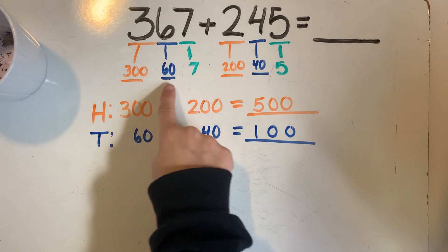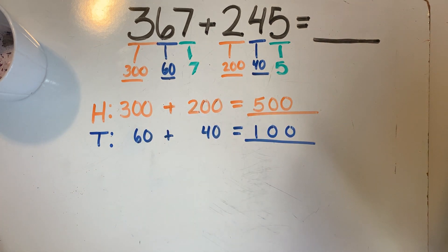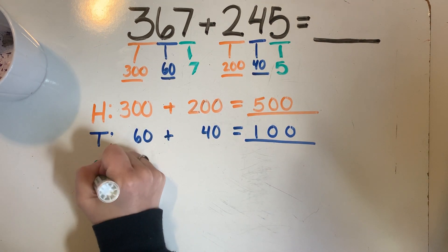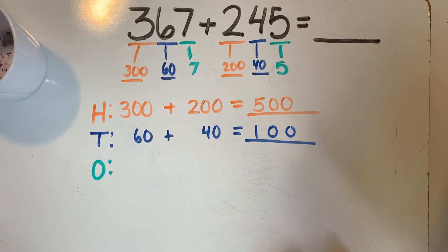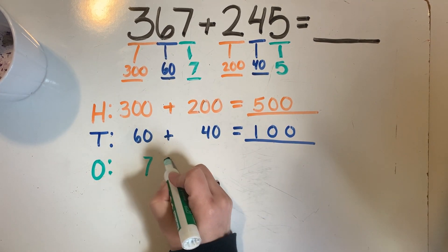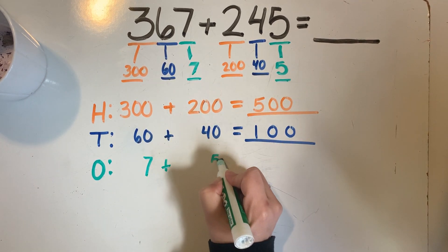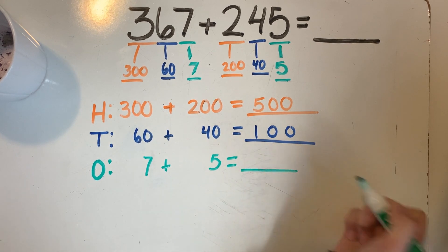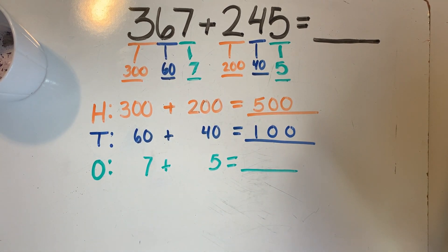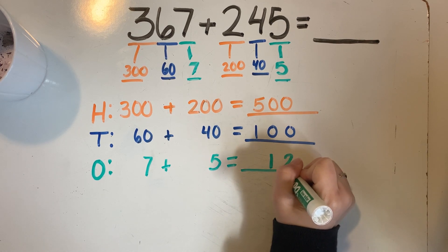Now that I've finished with my tens place, I can move to my ones place. I'm going to write an O here for ones. I'm going to take this 7 plus this 5, and that equals something. I add 7 plus 5 and write the answer on the line.